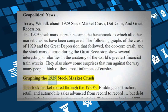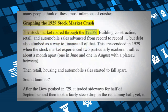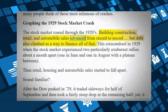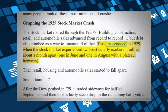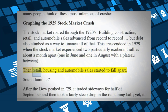Graphing the 1929 stock market crash: The stock market roared through the 1920s. Building construction, retail, and automobile sales advanced from record to record, but debt also climbed as a way to finance all of that. This crescendoed in 1929 when the stock market experienced two particularly exuberant rallies about a month apart — one in June and one in August with a plateau between. Then retail, housing, and automobile sales started to fall apart.